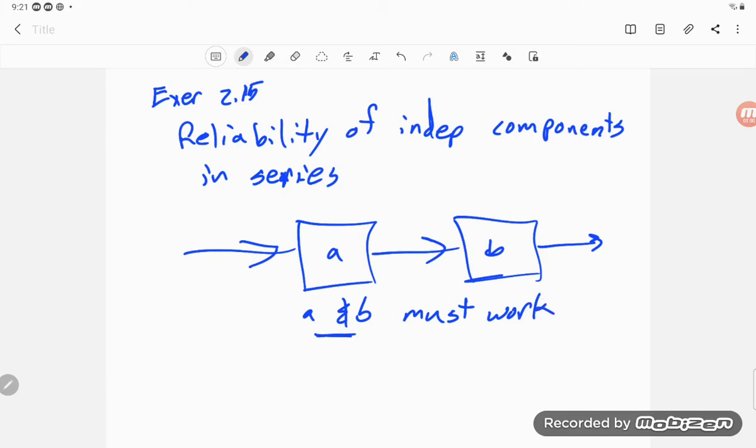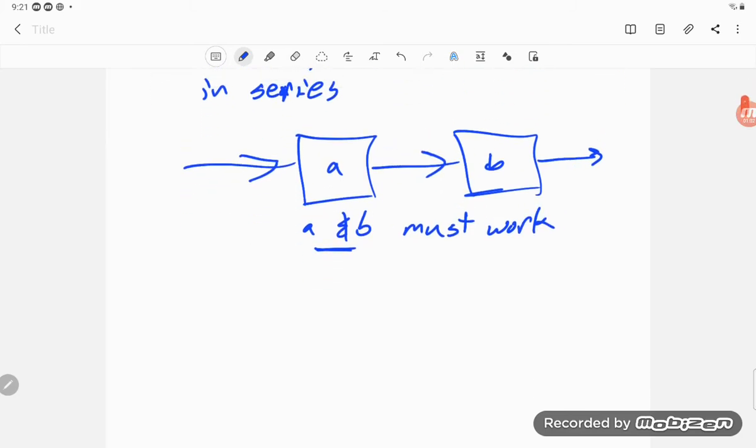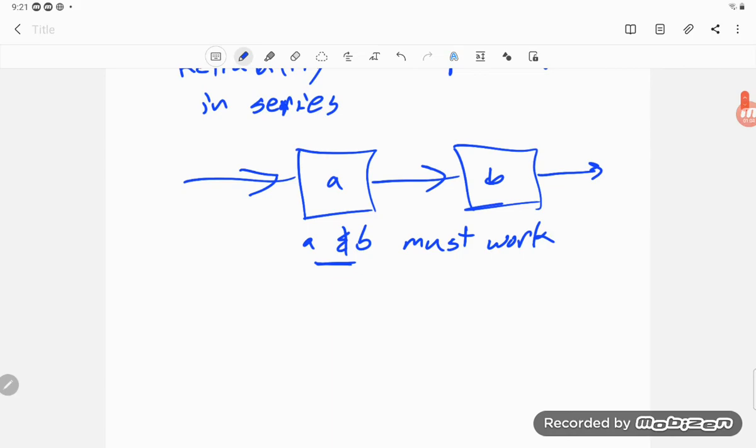There's the clue. If I want to know what's the probability that this thing is working, then I need to know the probability that A and B are working, so that intersection.